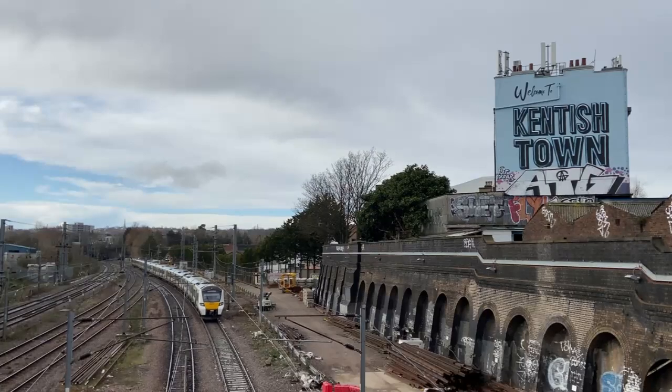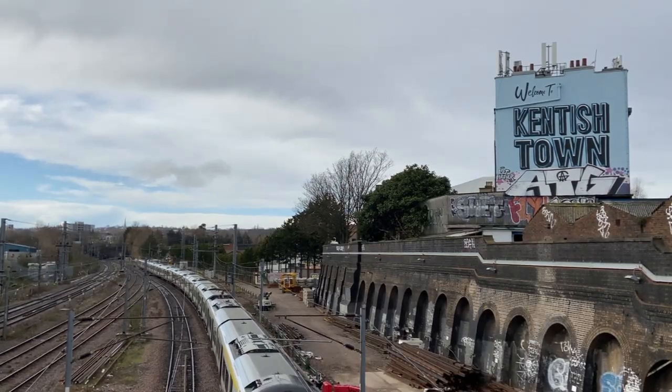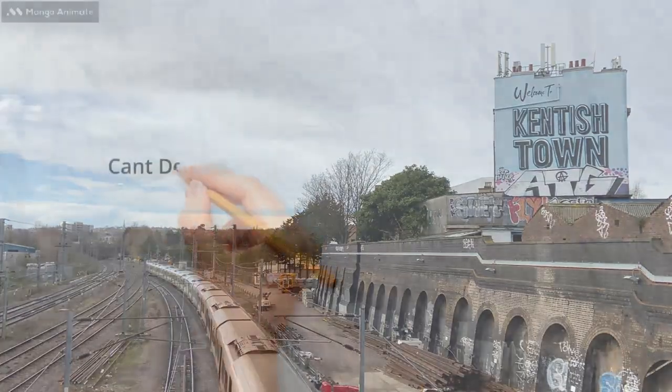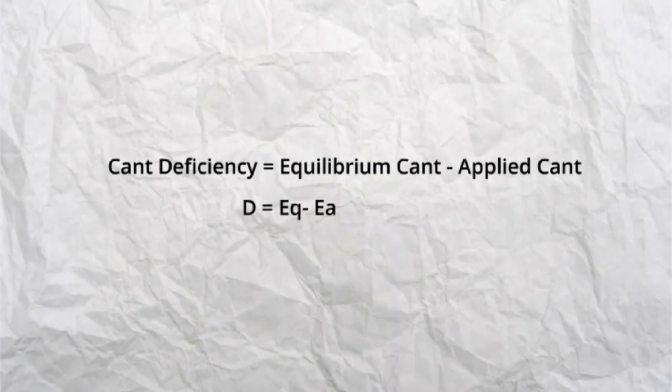Equilibrium cant, applied cant and cant deficiency are all linked together. This is best shown as an equation. Cant deficiency equals equilibrium cant minus the applied cant. You may see this in symbol form as well. This will read d equals eq minus ea.